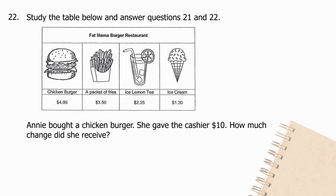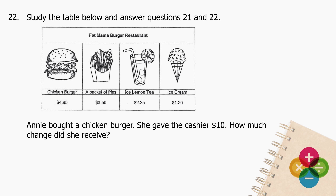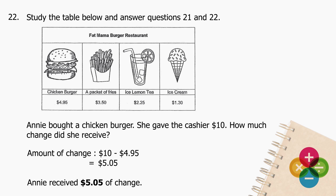Question 22: Annie bought a chicken burger. She gave the cashier $10. How much change did she receive? Subtract $4.95 from $10 and the difference is $5.05. Annie received $5.05 in change.